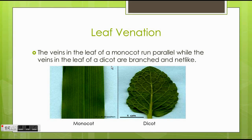Leaf venation: the veins in the leaf on the monocot run parallel, while the veins in the leaf of a dicot are branched and net-like. On the left we see that the monocot veins run parallel to one another, and this would be found in a grass leaf.